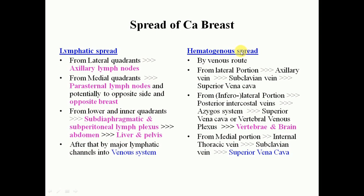The hematogenous route is mainly via veins. From the lateral portion, cancer cells travel via the axillary vein, then subclavian vein, then superior vena cava. From the inferolateral portion, they travel via posterior intercostal veins into the azygos system and superior vena cava. Because of communication with the vertebral venous plexus, cancer may affect the vertebrae and eventually the brain. From the medial portion, cancer cells may enter the internal thoracic vein, then subclavian vein and superior vena cava. These are very important routes for spread of breast cancer.